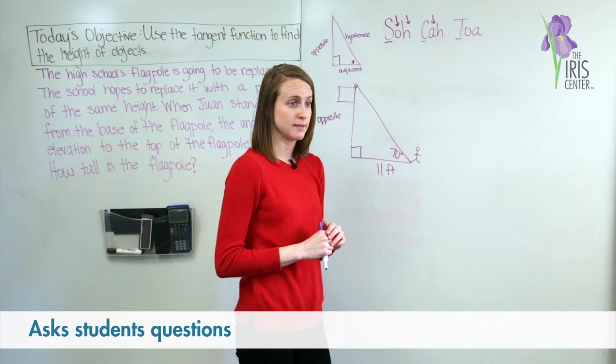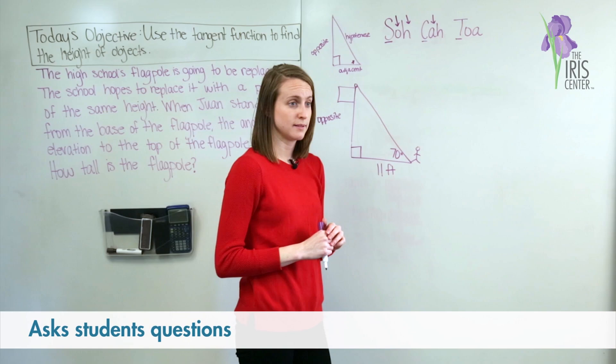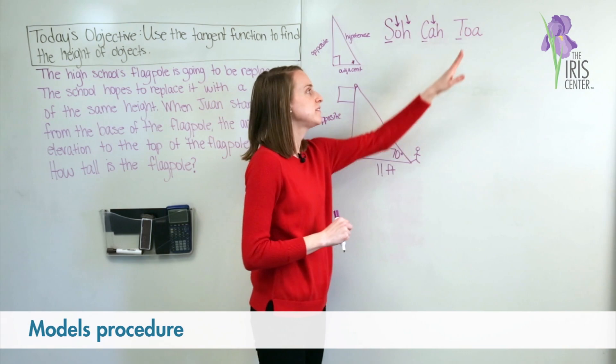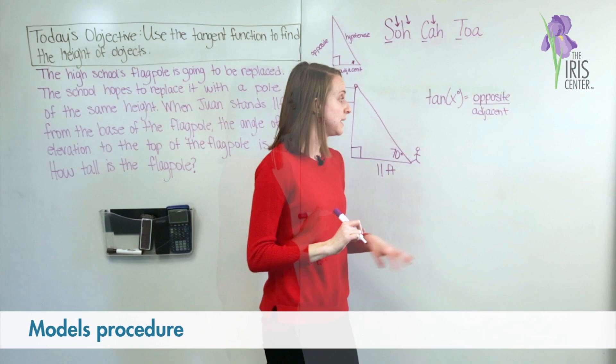Sophie, remind me what the ratio for tangent is? Opposite over adjacent. That's right. The tangent is the ratio of the opposite side over the adjacent side. Great thinking, Sophie.